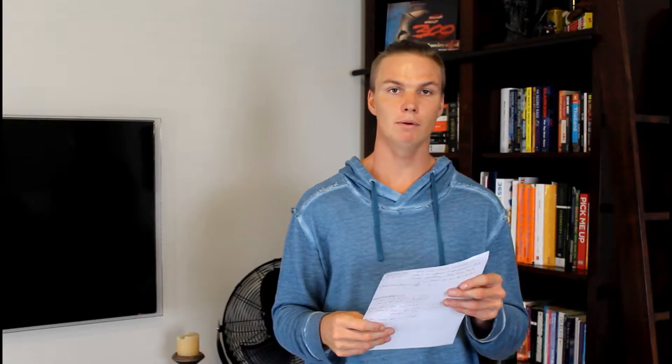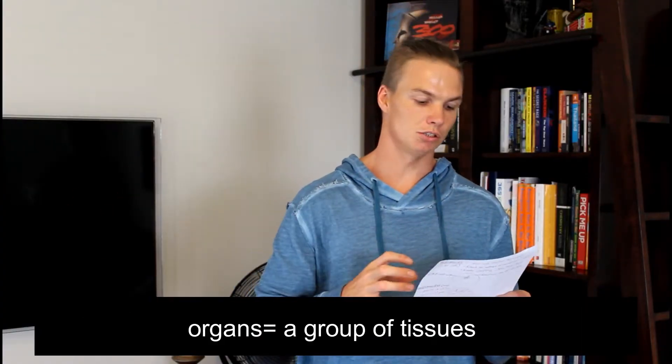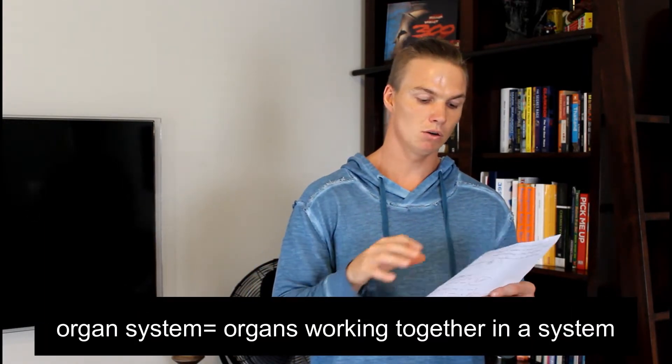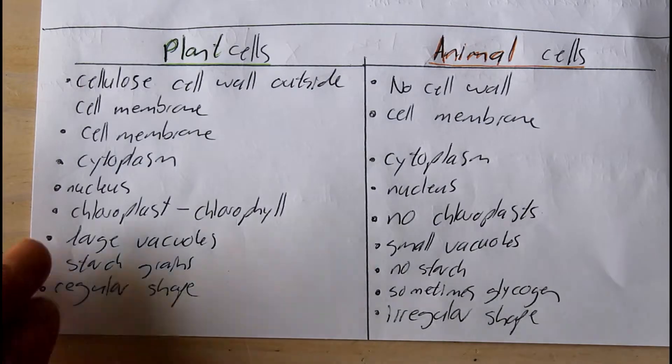The next section is cells and organisms. All organisms have cells, but within those organisms there can be multiple different types of cells — each type has a specialized function. Tissues are groups of cells with similar structure and function. Organs are made up of these tissues; an example would be our calf muscle or an onion bulb. Organ systems are organs that work together in a system — examples include our nervous system or our muscular system. Go and summarize the table in your textbook, as many questions come from knowing these differences.